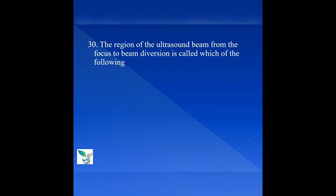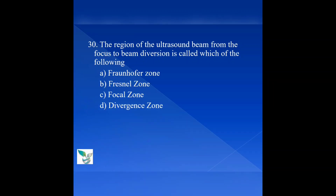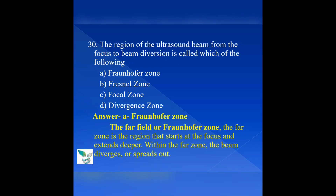Question number 30: The region of the ultrasound beam from the focus to beam divergence is called which of the following? Option A, Fraunhofer zone; option B, Fresnel zone; option C, focal zone; option D, divergent zone. The answer is option A — Fraunhofer zone. The far field, or Fraunhofer zone, is a region that starts at the focus and extends deeper. Within the far zone, the beam diverges and spreads out.